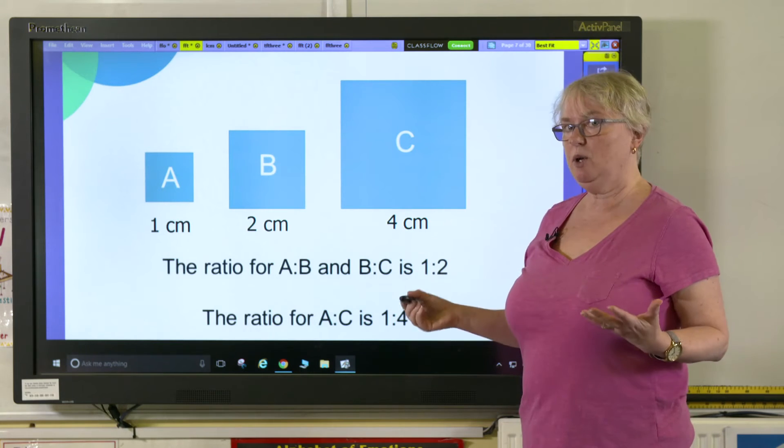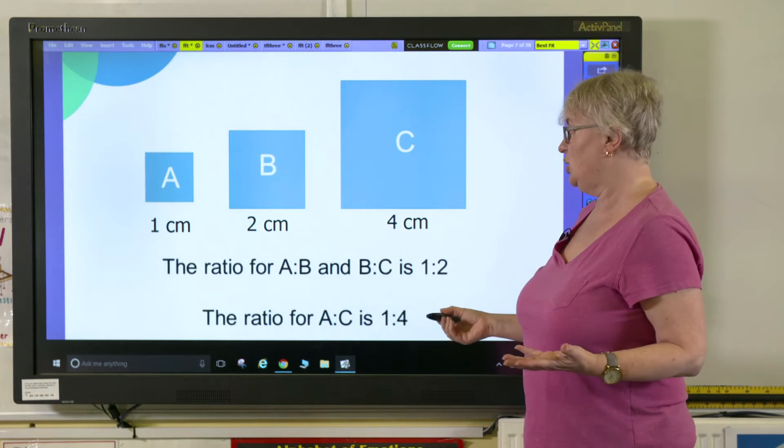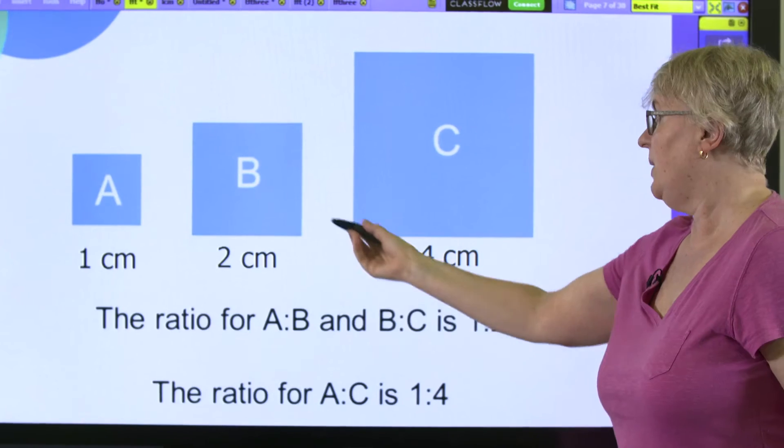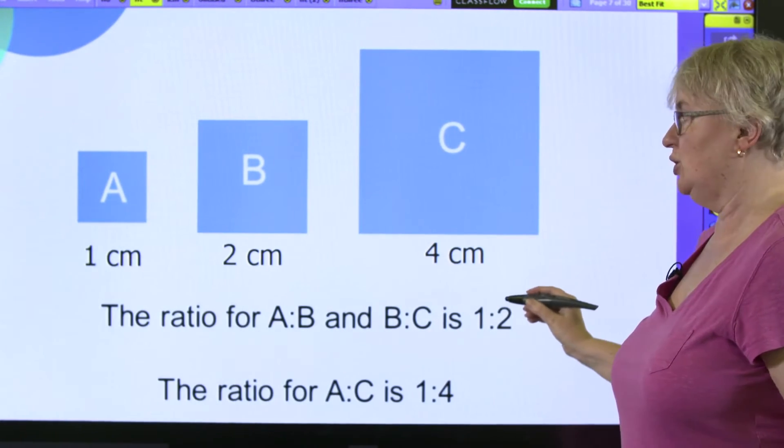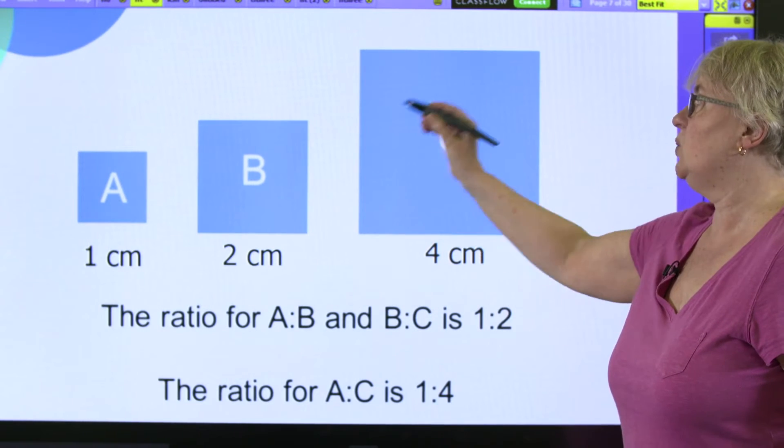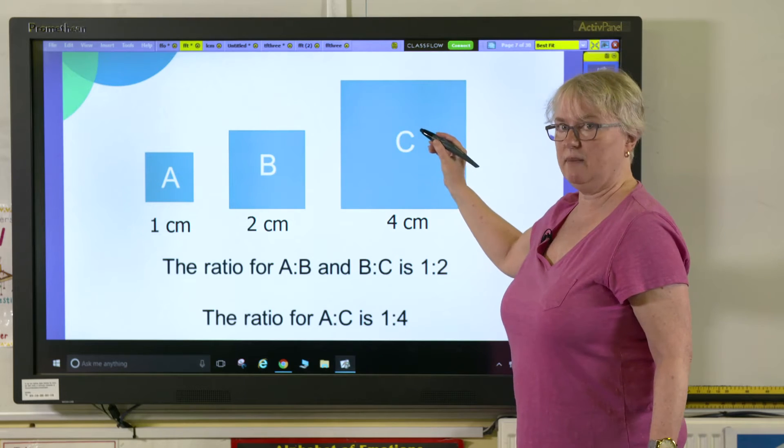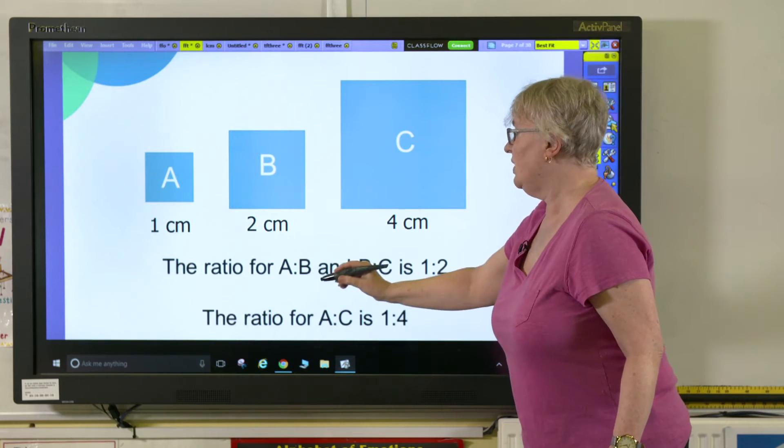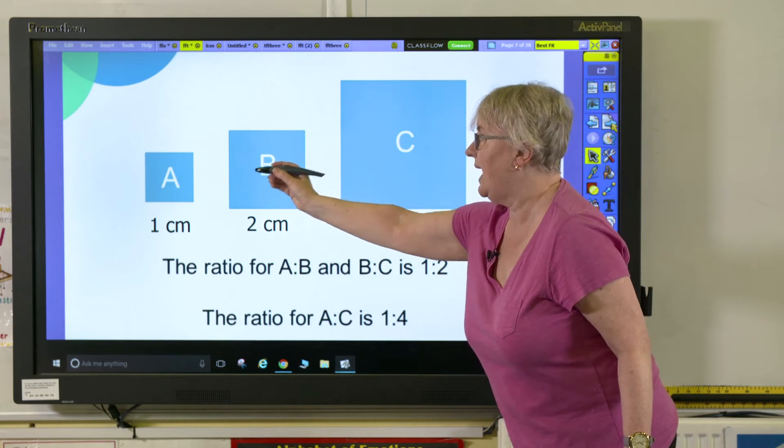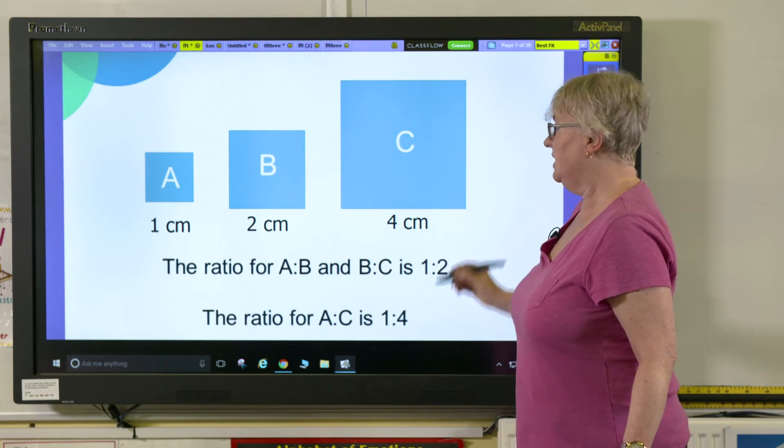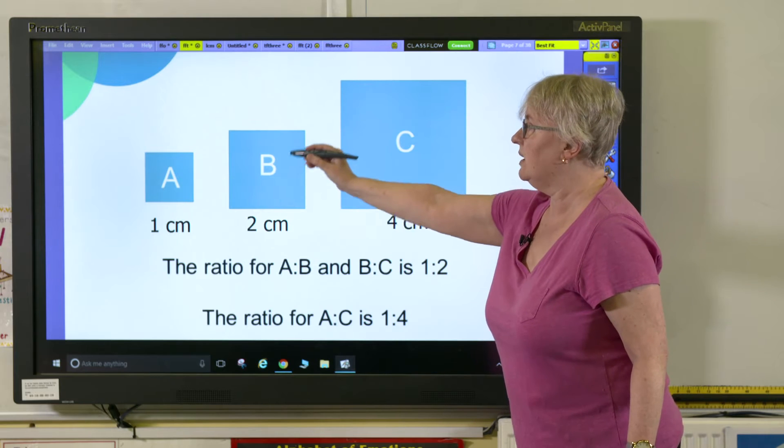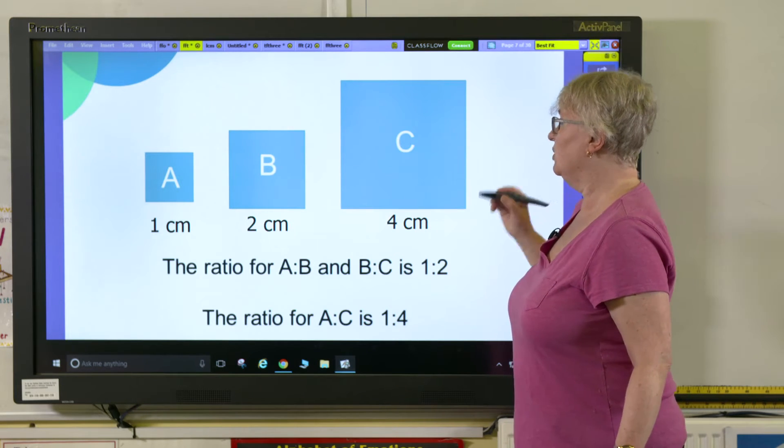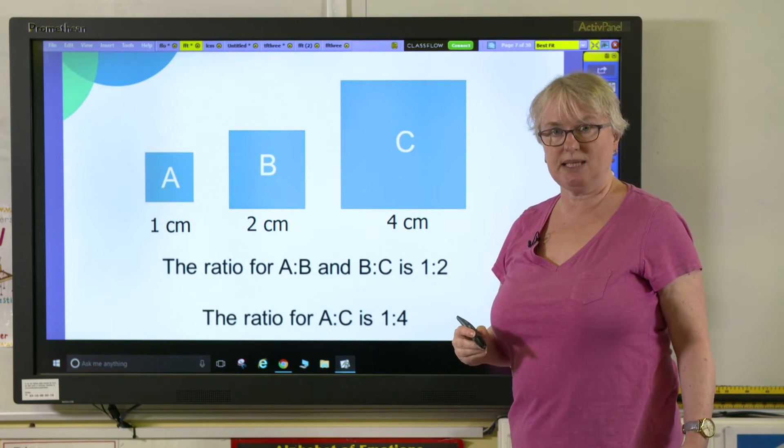Okay, now when I'm looking at that from the point of view of ratio, the ratio from A to B and from B to C is going to be 1:2 because they are twice as big as each other. When I look at the ratio of square A to square C, it's going to be 1:4 because I have to multiply the sides of shape A by four to make the square shape C.